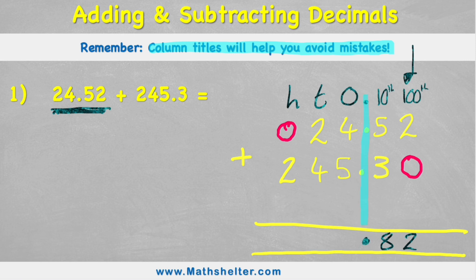Now in my ones, I have four and five, which is nine. In my tens, two and four, which is six. And in my hundreds, two on its own is two. So my answer to 24.52 plus 245.3 is 269.82. Pretty simple, right? It's exactly like column addition. We now just have a few digits after my decimal.